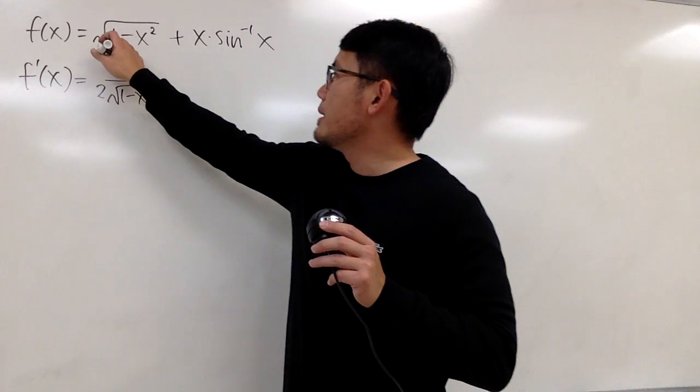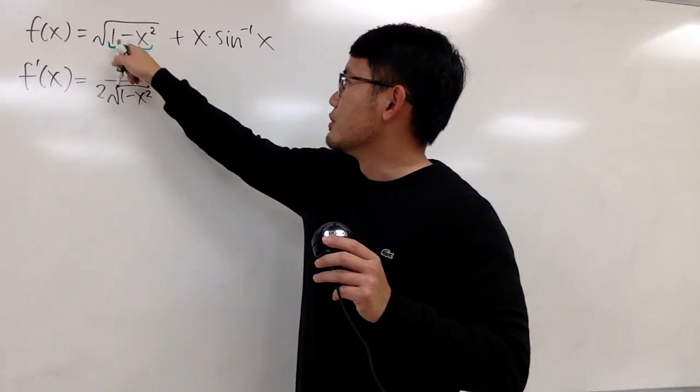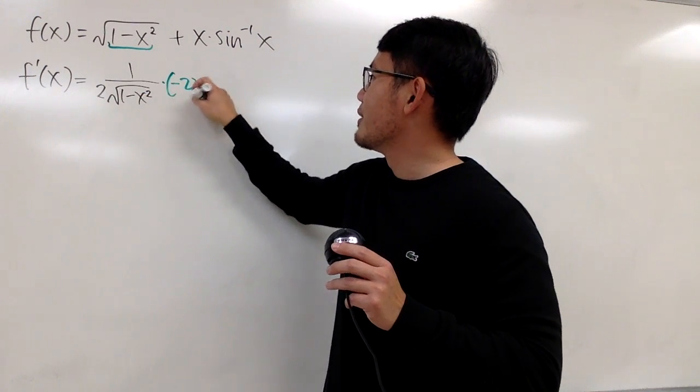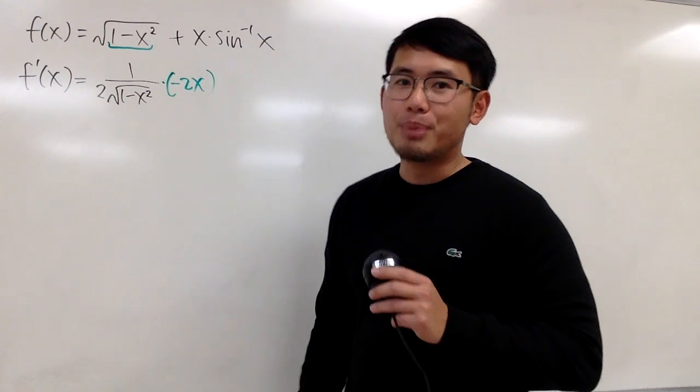You are going to multiply by the derivative of the inside. Well, the derivative of the inside is just going to give us negative 2x. So, let's put it down right here. So, that's it for the first part.